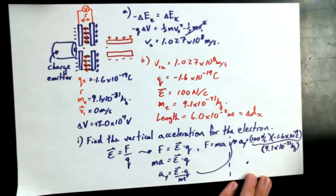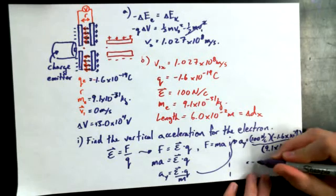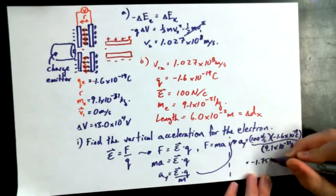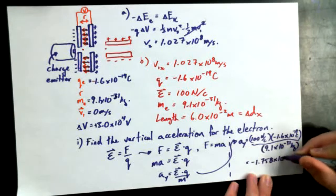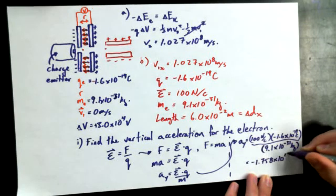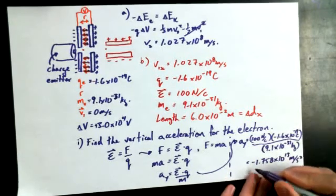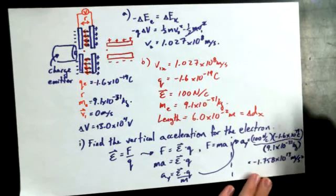Oh, I've run out of space for units again. Negative 1.758 times 10 to the 13 meters per second squared. Now, you can get hung up on this negative sign. Remember, in this case, we really were only concerned about the magnitude.